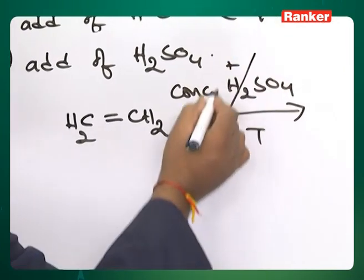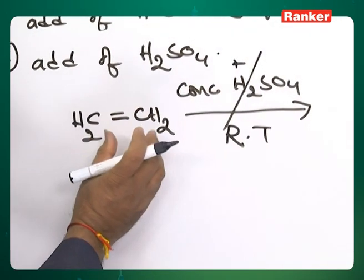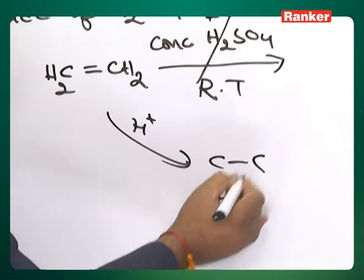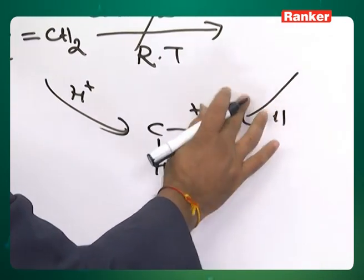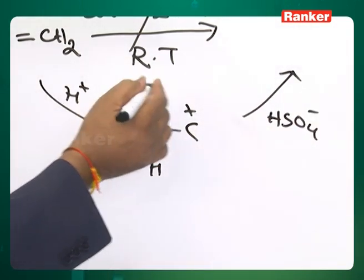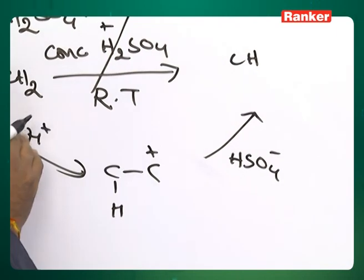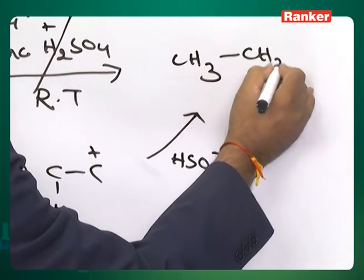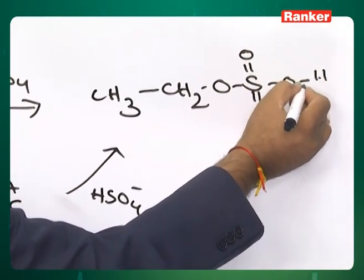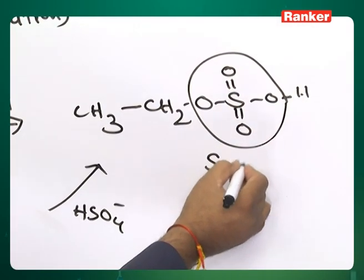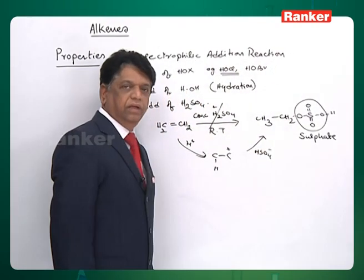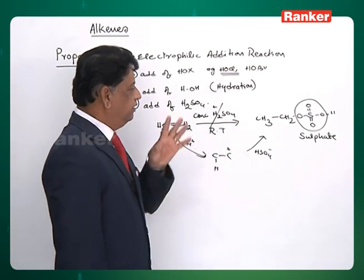In H₂SO₄ addition, first H-plus is added on one side, giving a carbocation. Then HSO₄-minus is added on the other side. The final product is CH₃CH₂-OSO₃H — this is called ethyl hydrogen sulfate. It has two characteristics: if you heat it, minus of sulfuric acid leads to regeneration of the original alkene; or if you add water and slightly heat it, the whole OSO₃H group is replaced by OH.